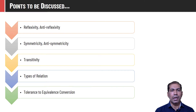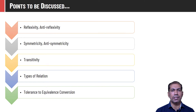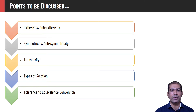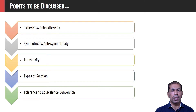In this video, I will be covering various properties of relations like reflexivity, anti-reflexivity, symmetricity, anti-symmetricity, and transitivity. I will also be discussing various types of relations like equivalence relation, partial order relation, tolerance relation, etc. And at the end, I will be discussing how to convert a tolerance relation into an equivalence relation.